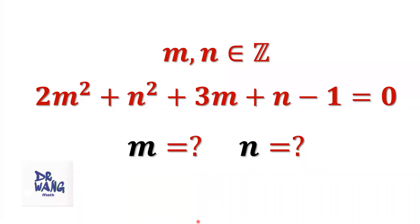Hello everyone, I'm Dr. Wang. Here is the question: if m and n are both integers, and 2m² + n² + 3m + n - 1 = 0, what are the values of m and n?